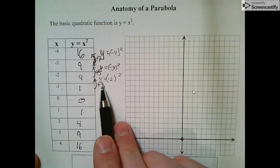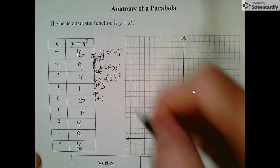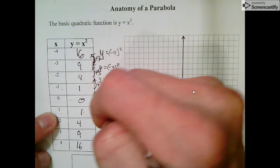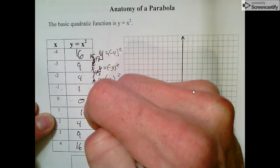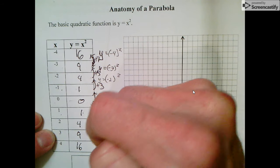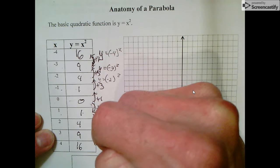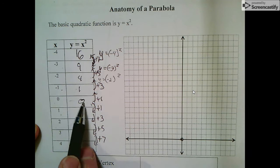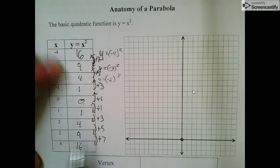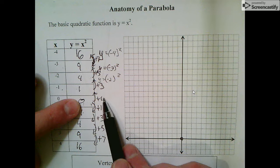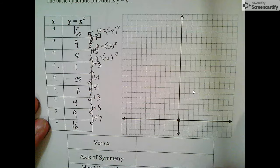We can see a pattern: we're going up by 1, then 3, then 5, then 7. The same thing happens on the right side. This is called the step pattern, where we start at the vertex and as we step outwards, we go up by the same amount on either side, and how much we go up by is the next odd number.